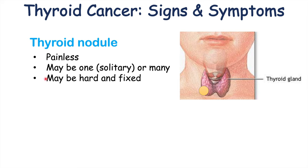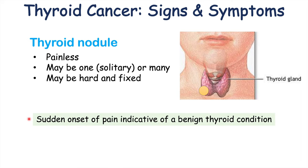Oftentimes the nodule is going to be hard and fixed, meaning that if the patient feels that lump on their neck, it will be hard and not easy to move. An important point to note is that if there is a sudden onset of pain from the nodule, that indicates it is more likely a benign thyroid condition — for instance, a cyst that has become hemorrhaged could cause a sudden onset of pain.